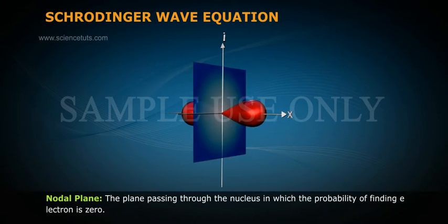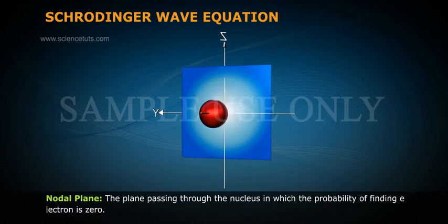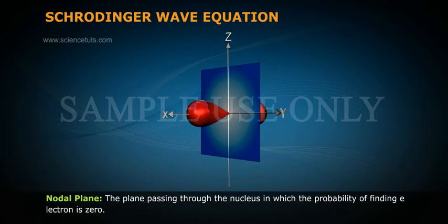Nodal plane: The plane passing through the nucleus in which the probability of finding an electron is zero.